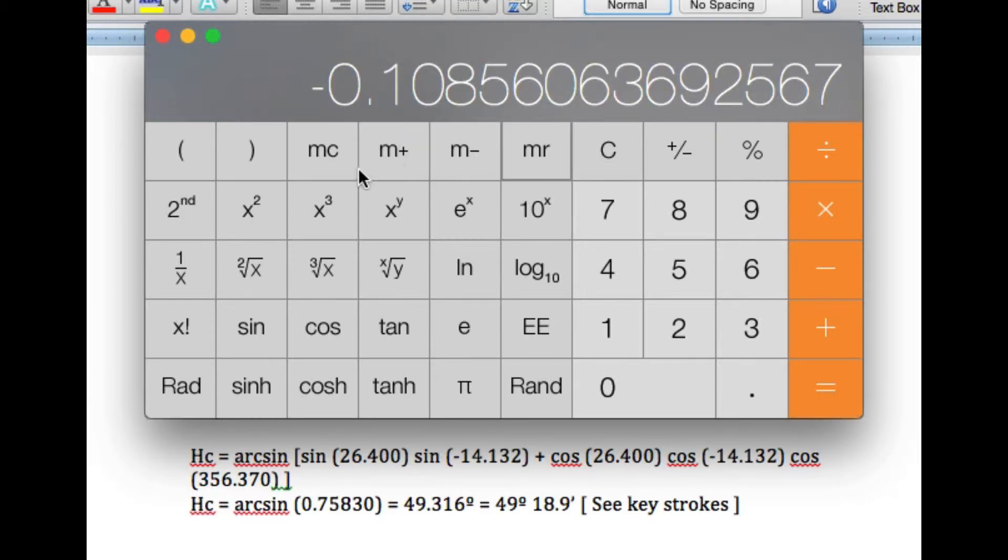Now I'm going to add that to the memory. Now I start this part: 26.4, and take the cosine of that, times.